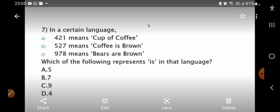9, 7, 8 means beers are brown. Which of the following represents is in that language? Option A is 5, option B is 7, option C is 9 and option D is 4. So, how to solve this?